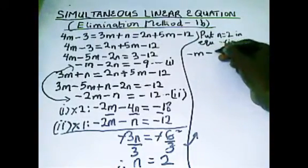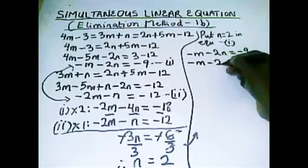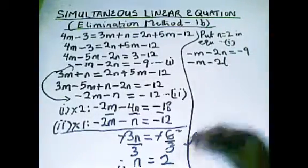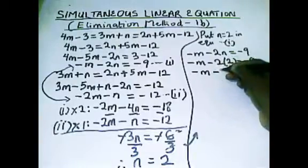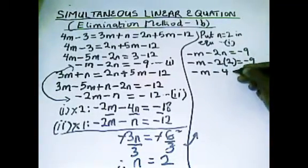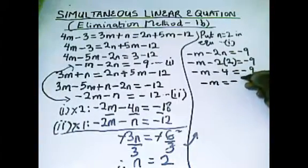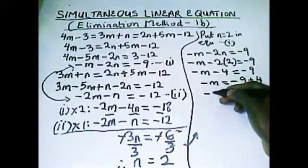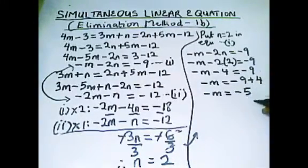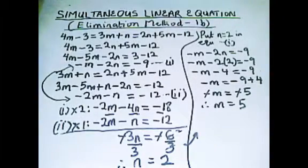Substituting n equals 2 into equation 1: minus m minus 2 times 2 equals minus 9. Opening the brackets, 2 times 2 gives 4, so minus m minus 4 equals minus 9. Sending minus 4 to the other side, it becomes plus 4, giving minus m equals minus 9 plus 4, which is minus 5. The negative signs on both sides cancel, so m equals 5.